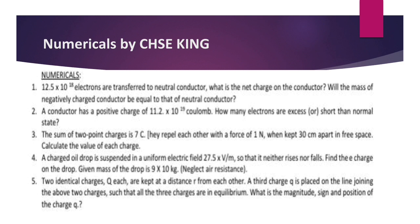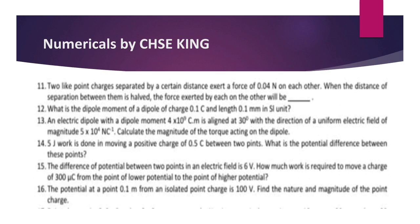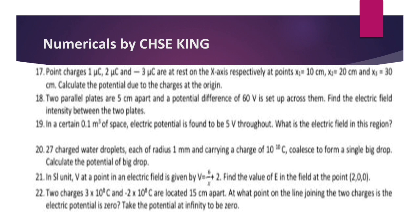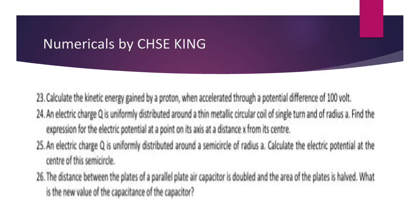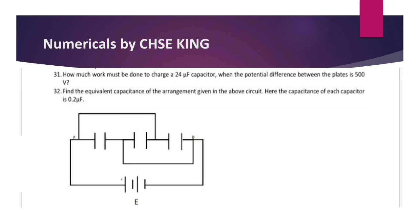The numerical questions range from question 6 to 10, then 11 to 16, then 17 to 22, then 23 to 26, then 27 to 30, and finally 31 to 32. That gives around 8 to 5 numerical questions along with 3 long questions to cover in this electrostatics chapter selection.